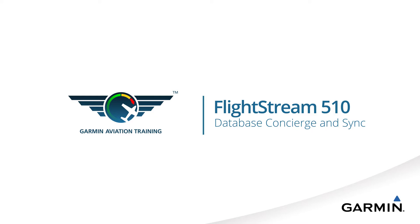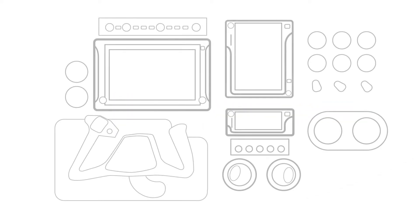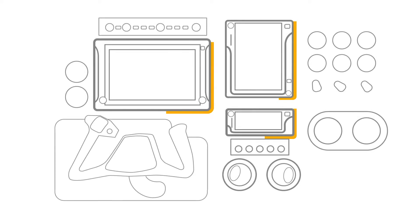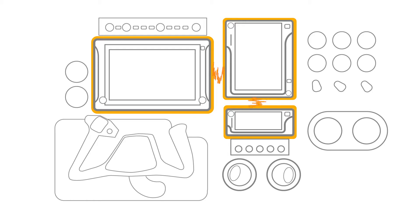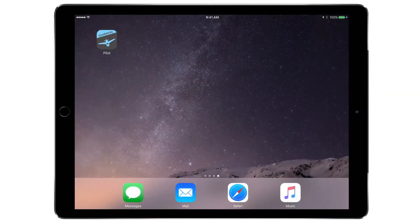Garmin's Database Concierge allows updating of your aircraft's databases wirelessly through Garmin Pilot. This allows updating databases without having to take SD cards home. Database Syncing enables syncing between units in the aircraft. Combined, Database Concierge and Database Sync make for an easier database update.